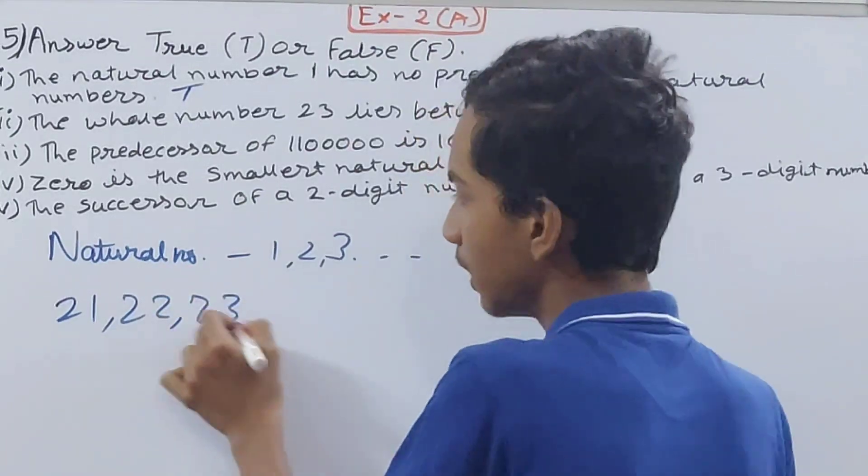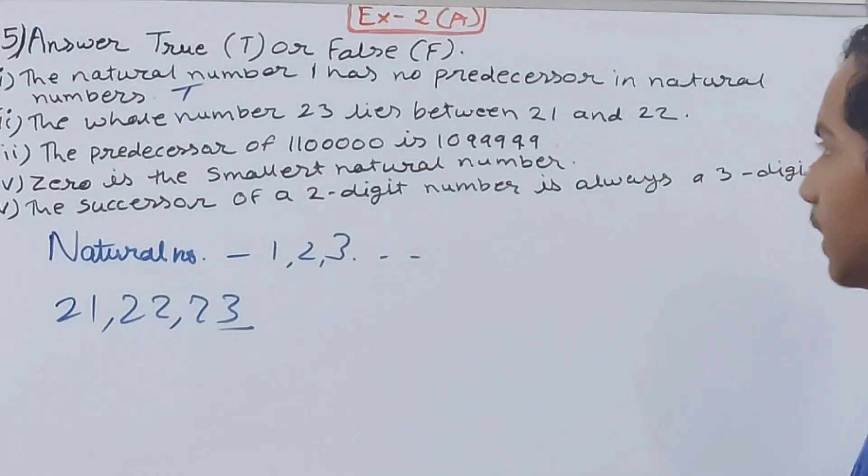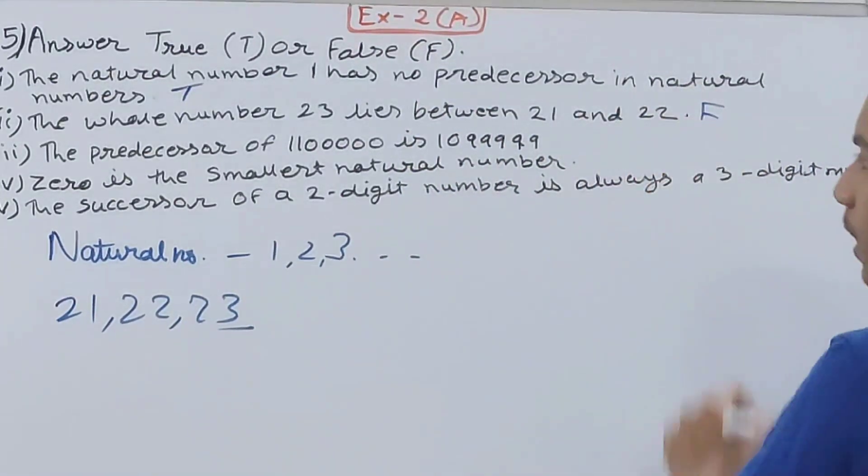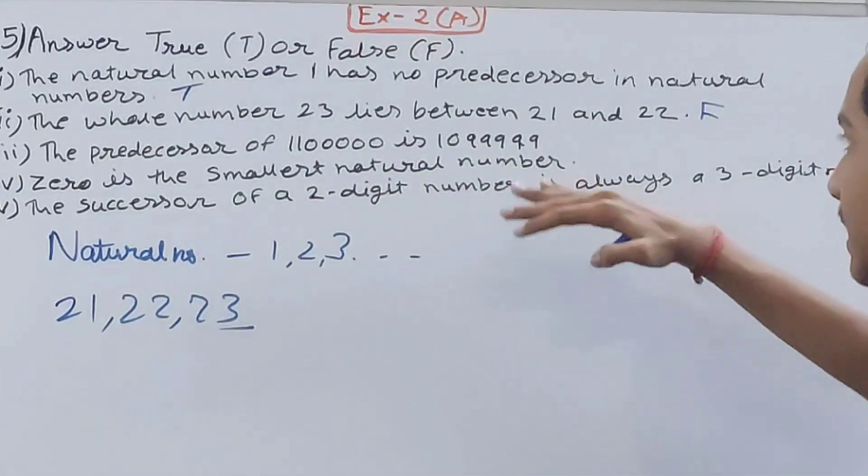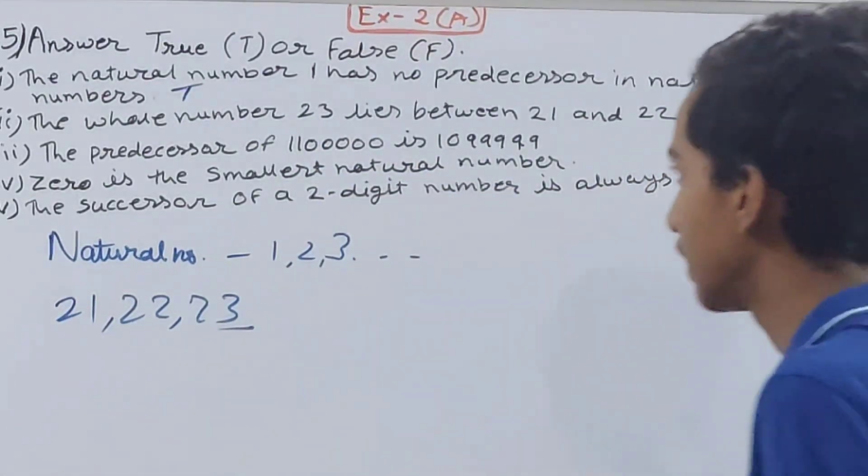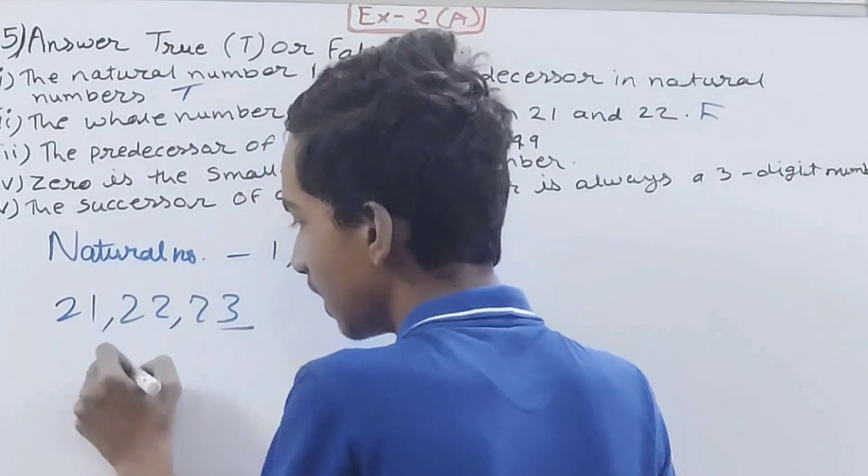The whole number 23 lies between 21 and 22. No, right? Why? Because we know first comes 21, then comes 22, then comes 23. So it comes after 22, right? So this statement is false. Now see, predecessor of 11 lakh is 1099999. This is true. See how.